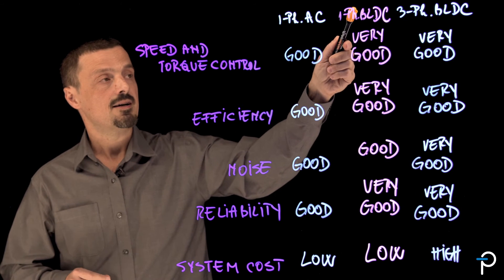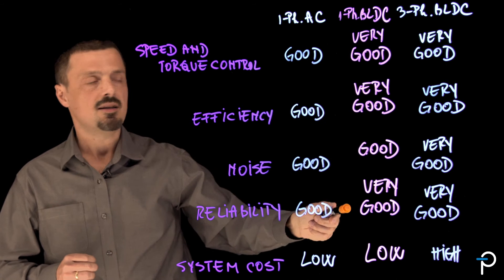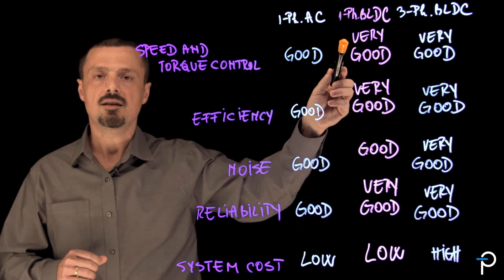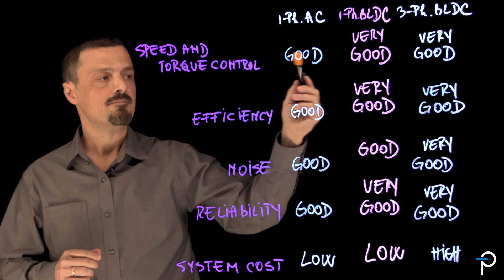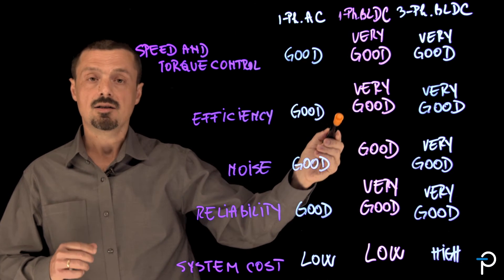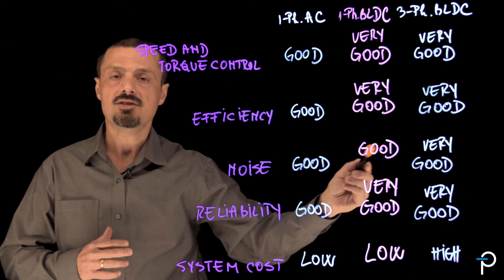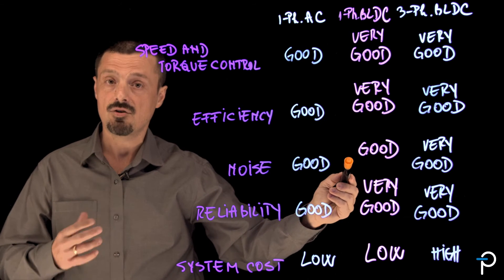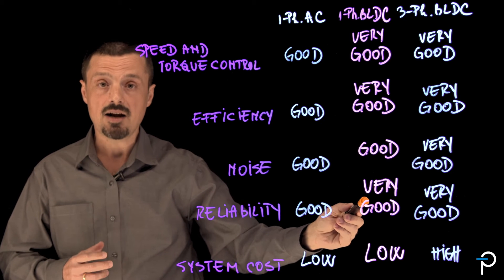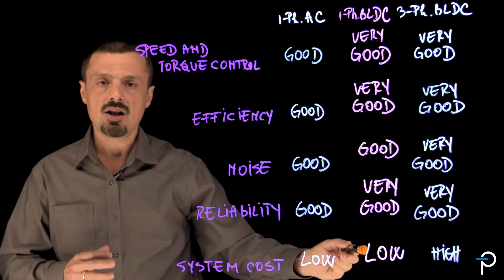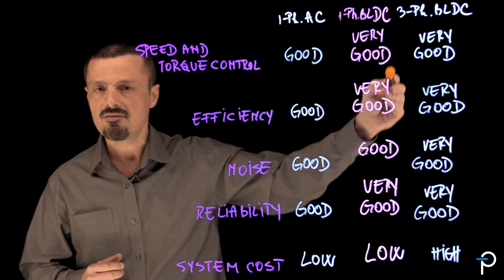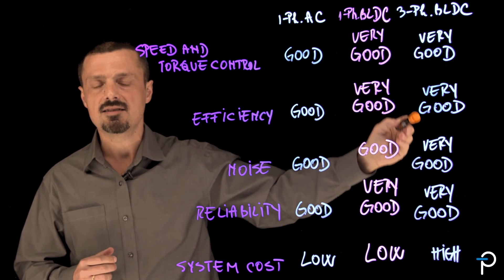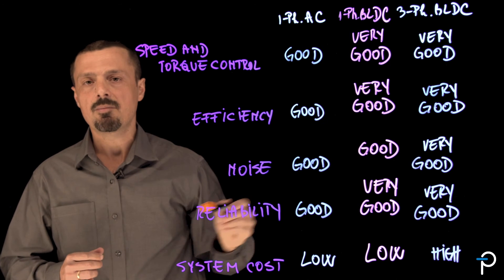We left the middle of the table empty because this is where single-phase BLDC fits. It offers very good speed and torque control, very good efficiency, good noise, maybe not as good as three-phase but good enough for most applications, high reliability, and a low system cost. Bottom line, single-phase BLDC brings the advantages of the three-phase design at a low system cost.